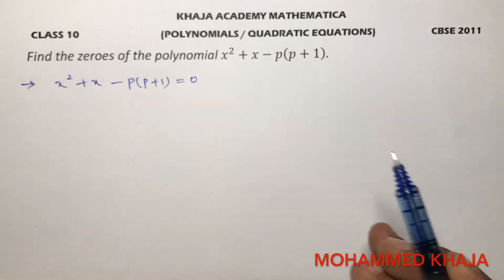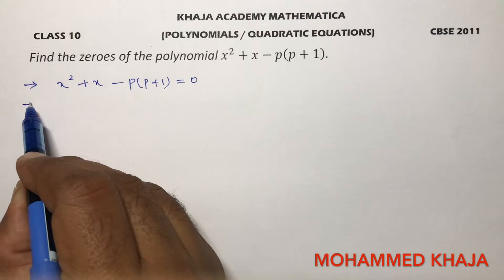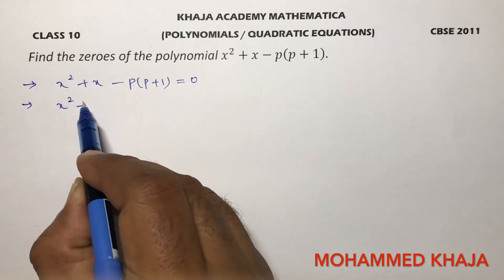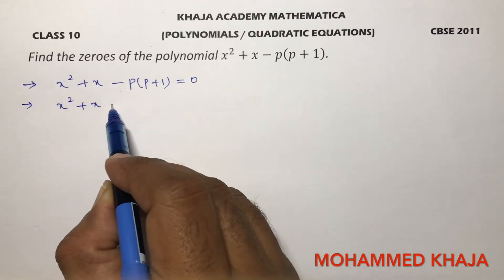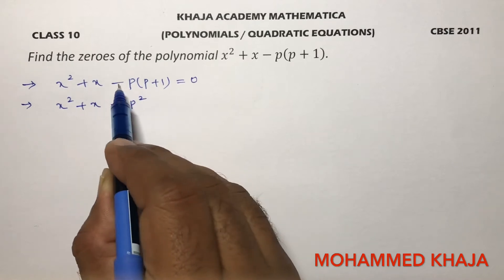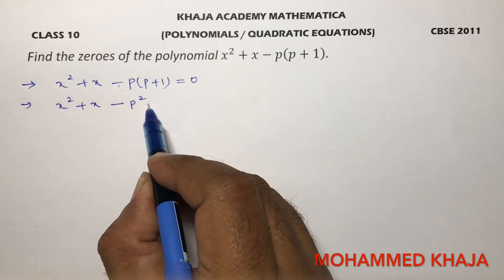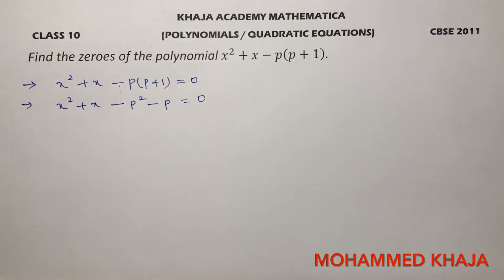To find the zeros, equate the polynomial with 0, then find the value of x. Now here, x squared plus x minus p times p minus p squared minus p plus 1 equals 0.